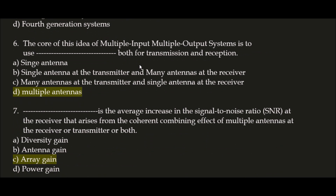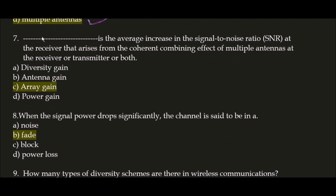Next question: the core idea of Multiple Input Multiple Output (MIMO) systems is to use multiple antennas. Both multiple input and multiple output are used in multiple antennas for transmission and reception respectively.